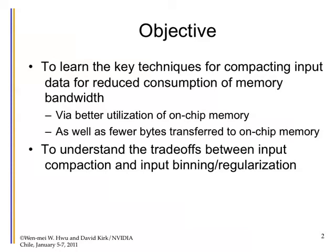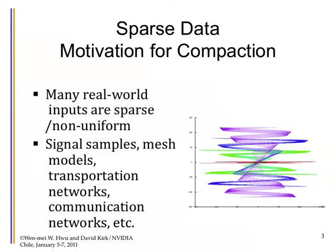Many real-world inputs are sparse and non-uniform. If you're in astronomy, you'll know that the input data is extremely non-uniform — there are very dark parts of the sky and very bright parts. Mesh models like finite element models, transportation networks, the US freeway system is extremely non-uniform in terms of connectivity. Communication networks are all very sparse kinds of interconnects that will translate into sparse data representation in your models.